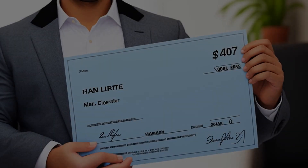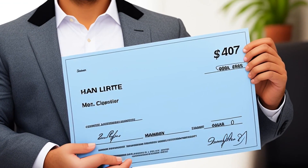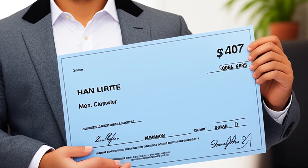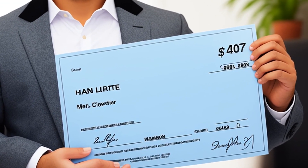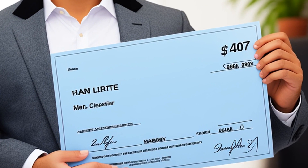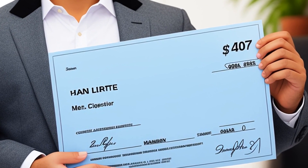Jim Colston, a man with an intellectual impairment, received an erroneous Social Security Administration check and subsequently spent most of the money. When the administration demanded repayment, Colston argued he was not at fault and that recovery would undermine the purpose of Social Security.